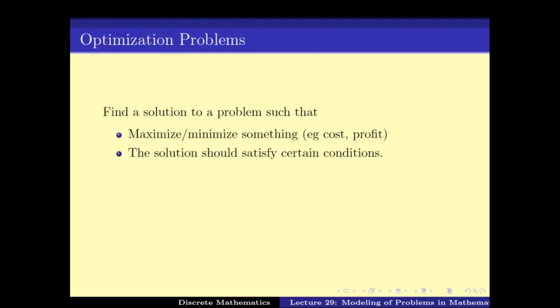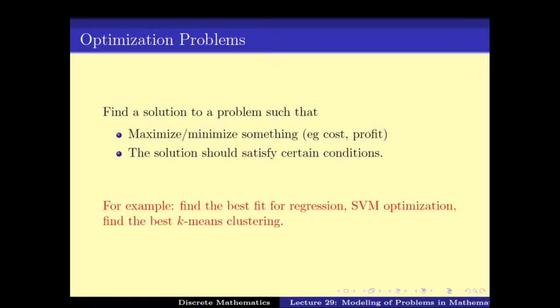What do we mean by an optimization problem? It means that we want to maximize or minimize something — say, the cost or profit of something — under certain conditions being satisfied. In this video we will be looking at some problems from naturally occurring problems in industry which are optimization problems, and we will see how to use linear programming, or in general mathematical languages, to model these problems.